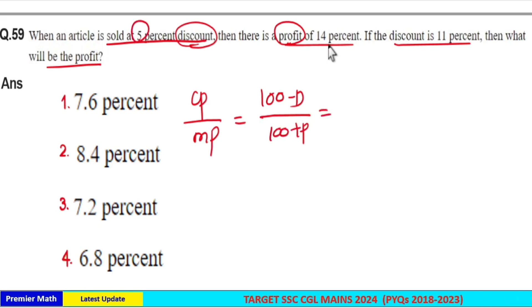Now when you have 5% discount, you have 14% profit. So 100 minus 5 is 95 rupees is the course price and 100 plus 14, 114 rupees is the mark price. Same way,